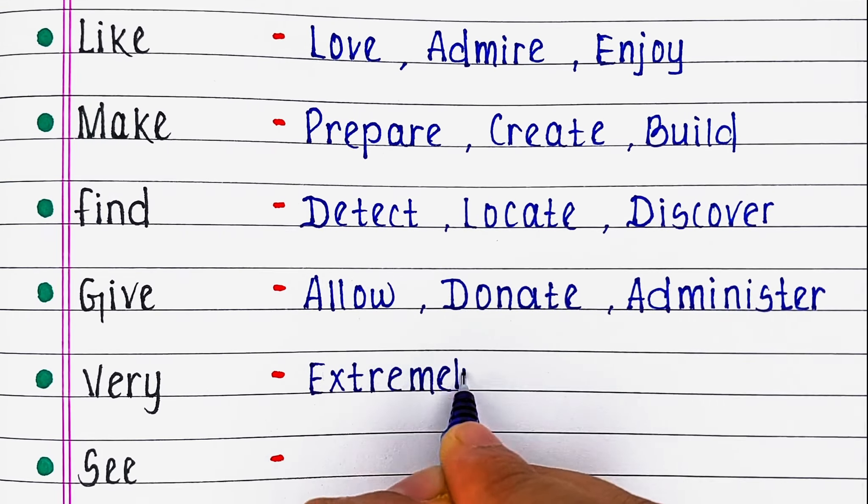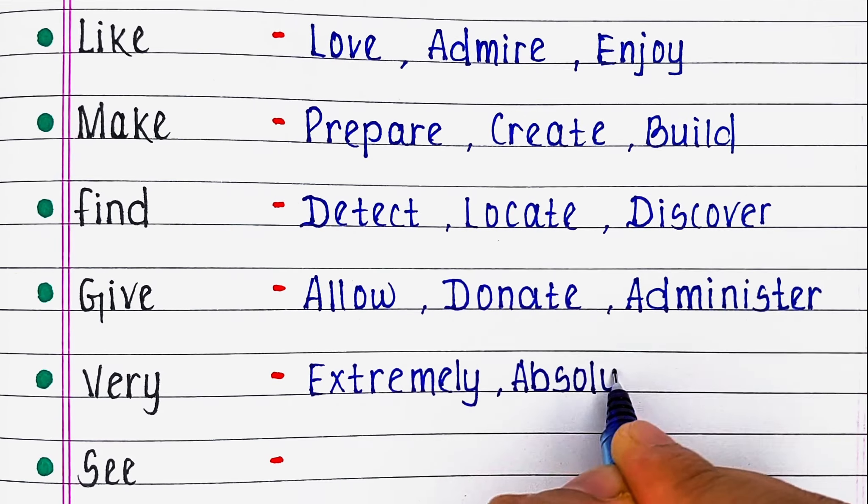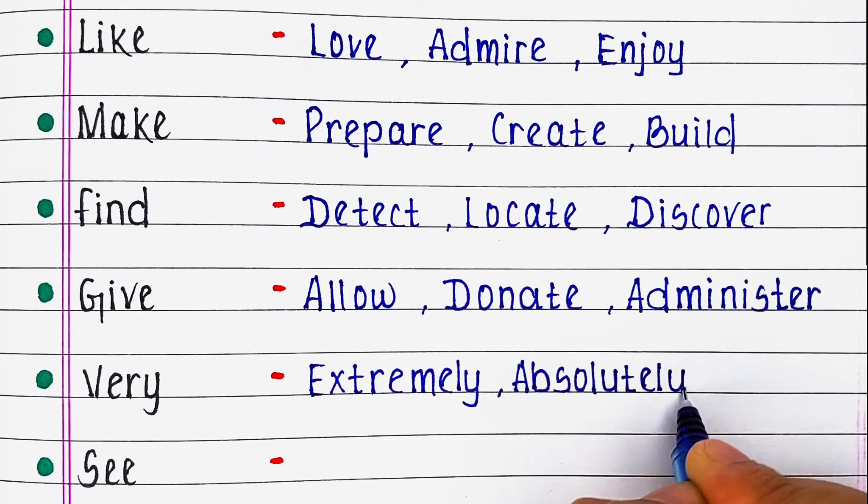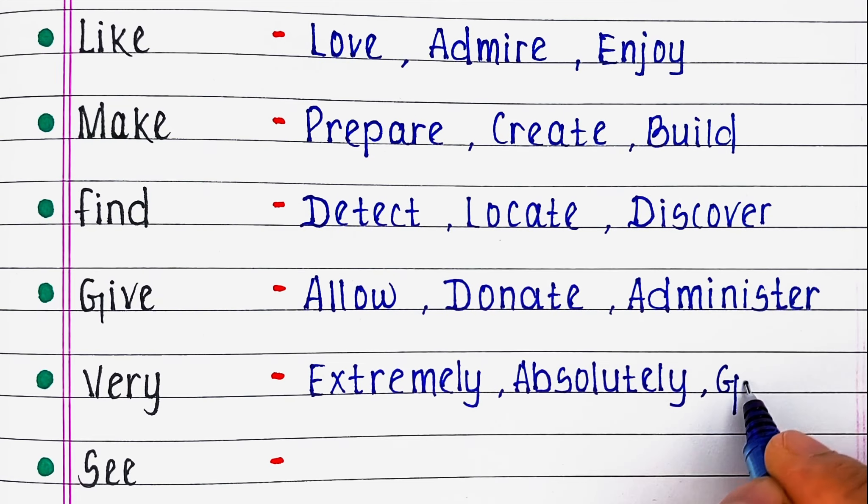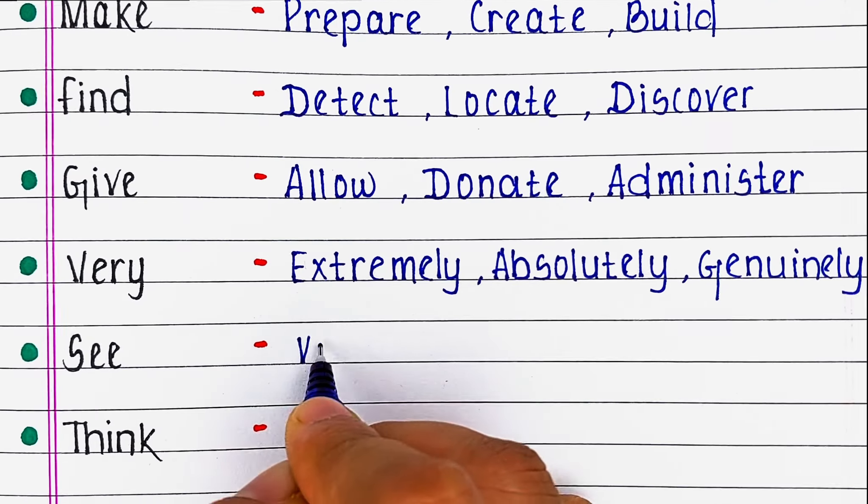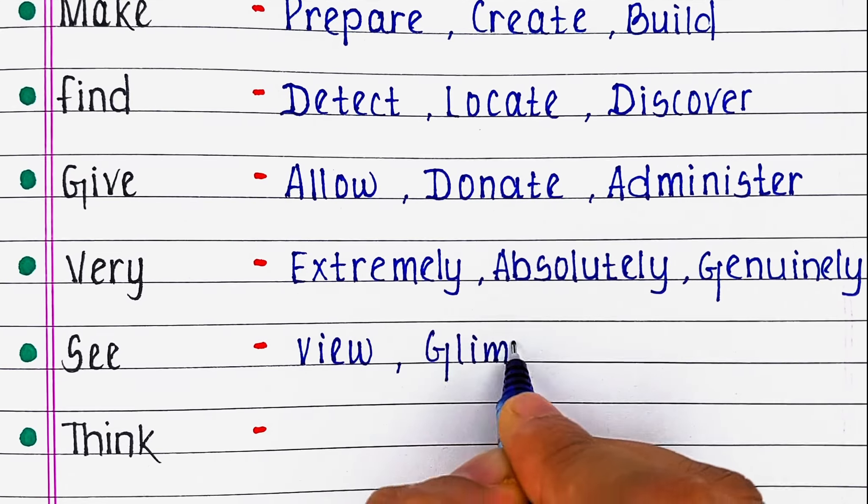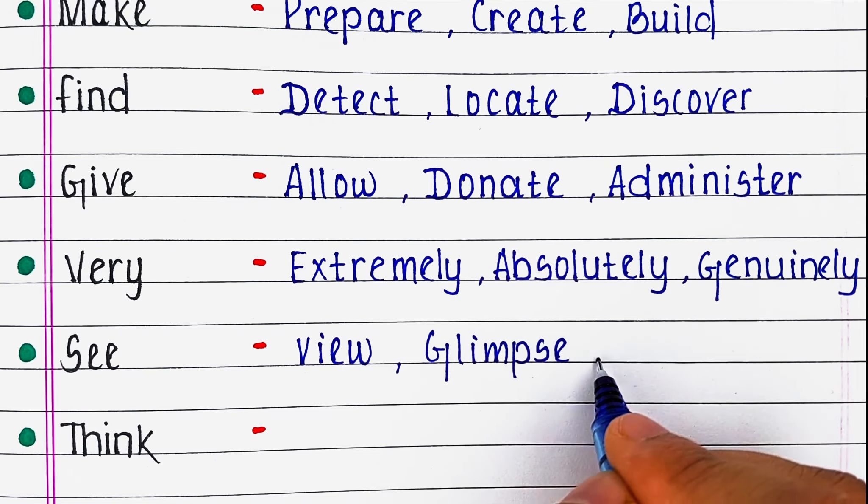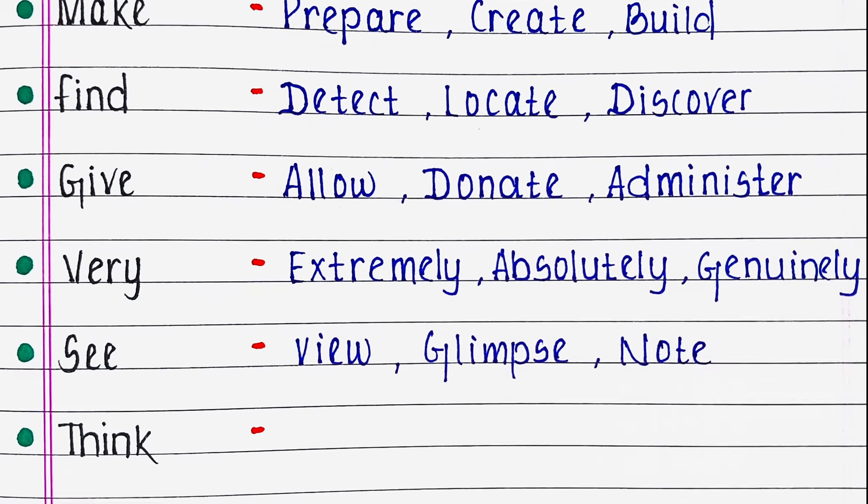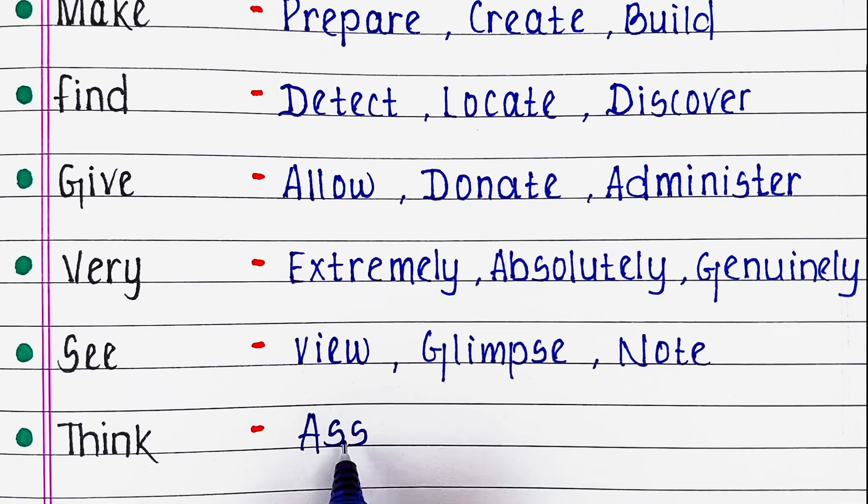Next word is Very. Its synonyms are Extremely, Absolutely and Genuinely. Next word is See. Its similar meaning words are View, Glimpse and Note.